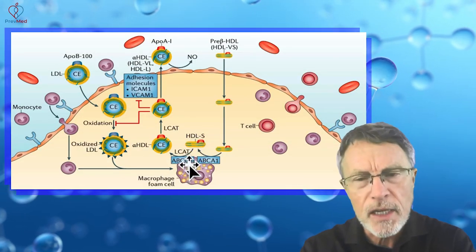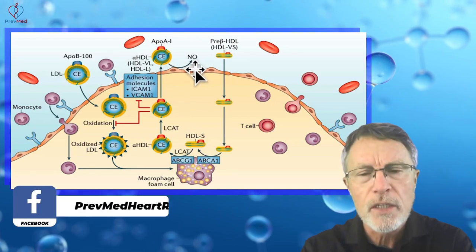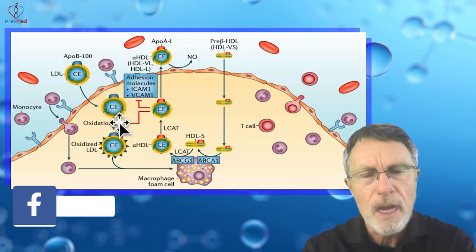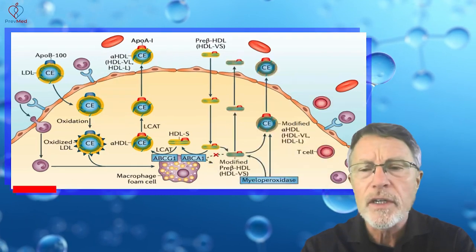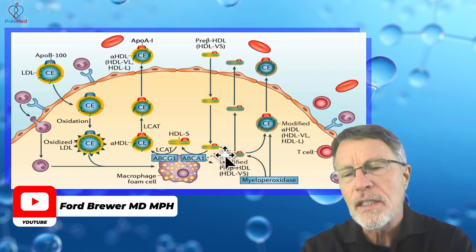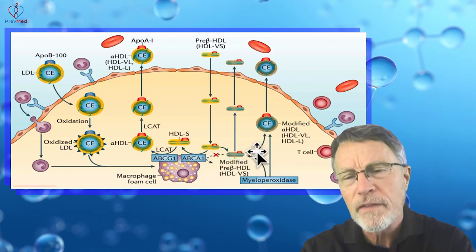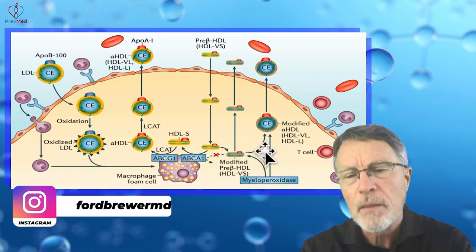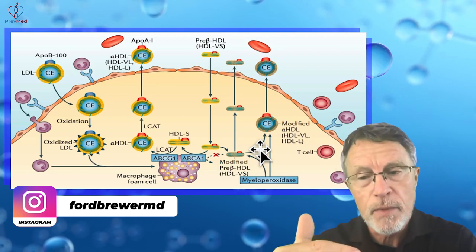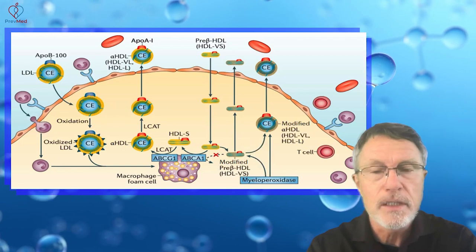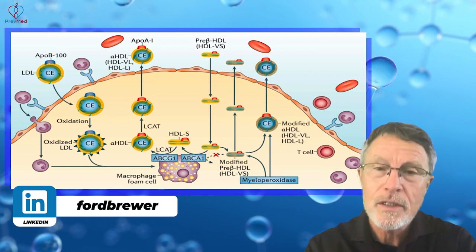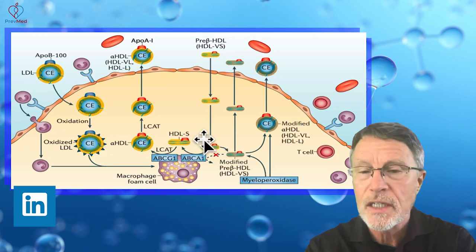HDL stops that inflammatory process and encourages formation of nitric oxide. On the other side, there's HDL and myeloperoxidase. HDL can be modified and impacted negatively by myeloperoxidase — it usually decreases the oxidation and inflammation driven by myeloperoxidase. Damage — usually genetic — to the HDL protein apolipoprotein A1 can cause dysfunction in any of these areas.